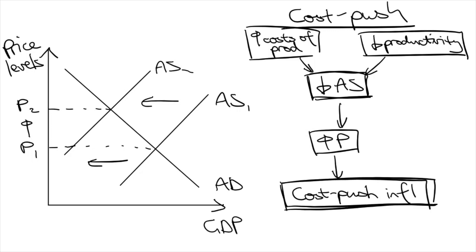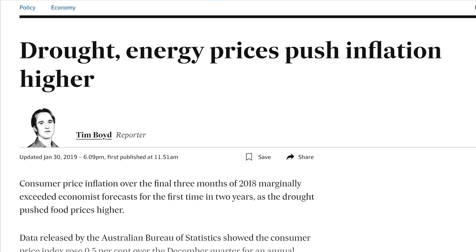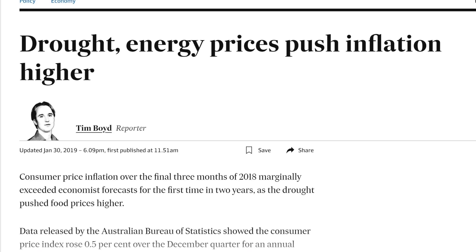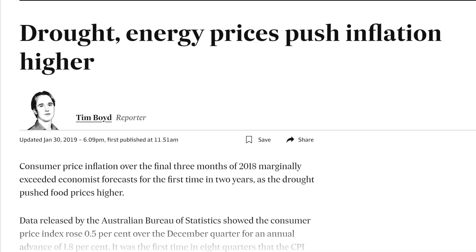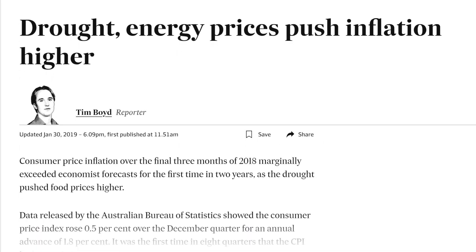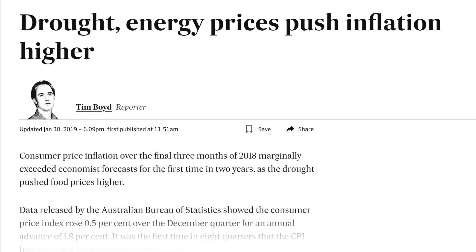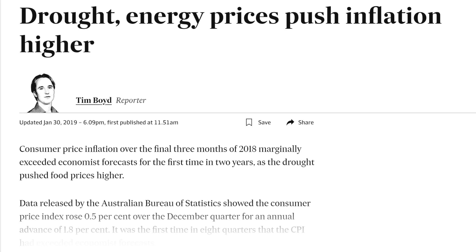Higher production costs or drops in productivity cause the aggregate supply curve to shift to the left, causing higher price levels. Typical examples of Cost-Push Inflation in Australia would be caused by increases in energy or oil prices. Cost-Push Inflation could also be caused by increases in wages without corresponding increases in labour productivity.